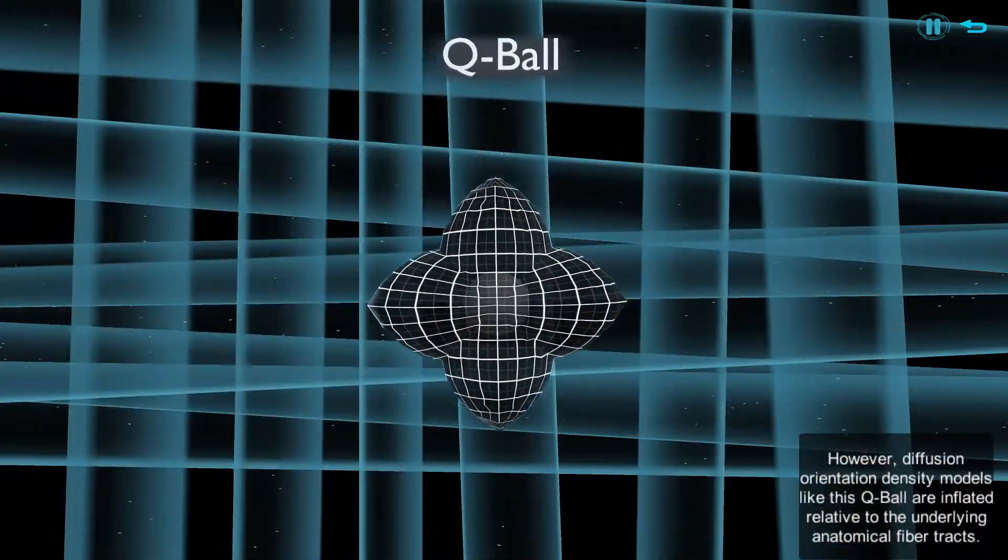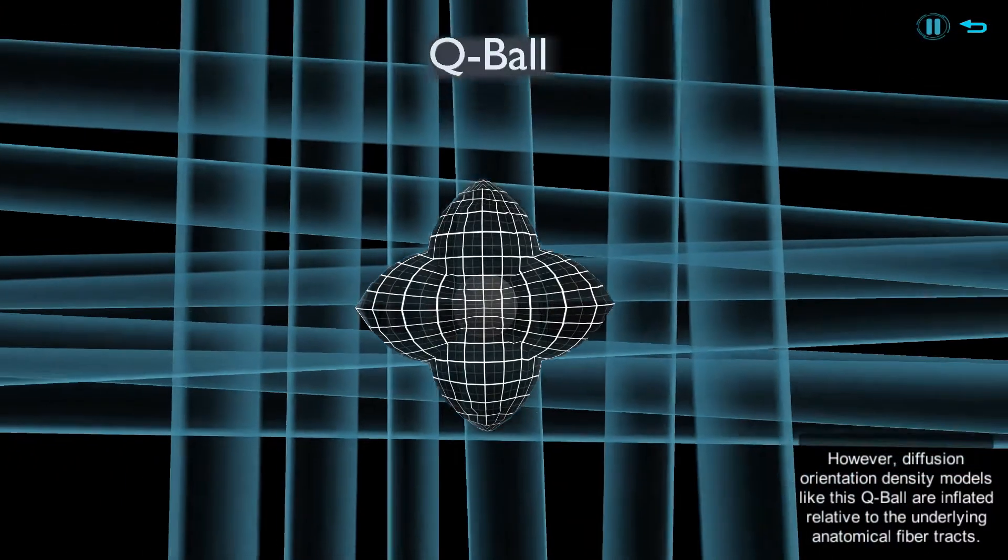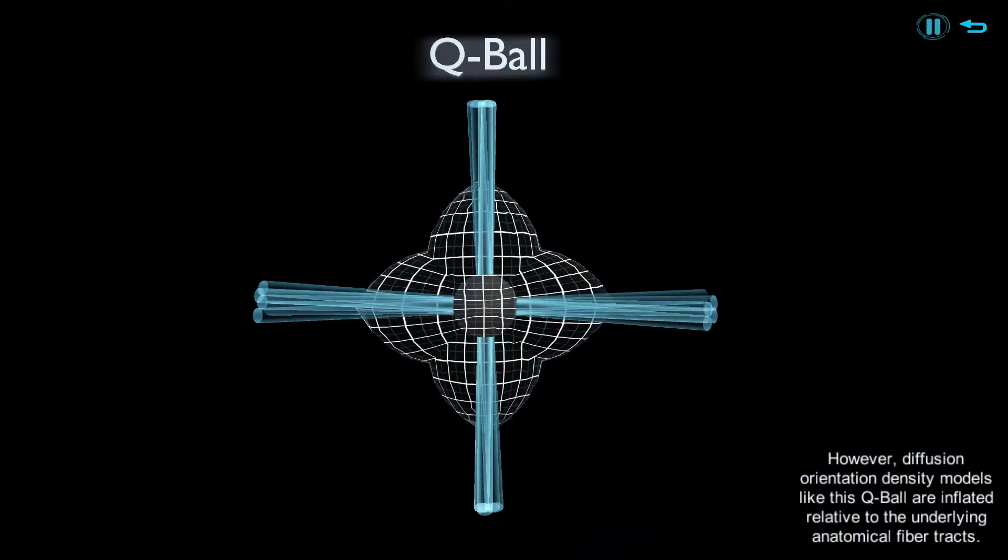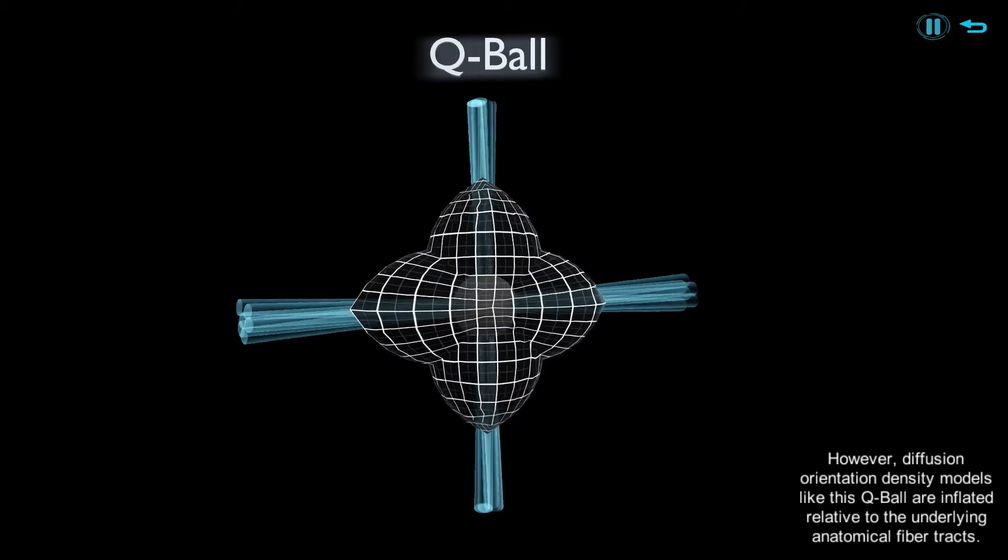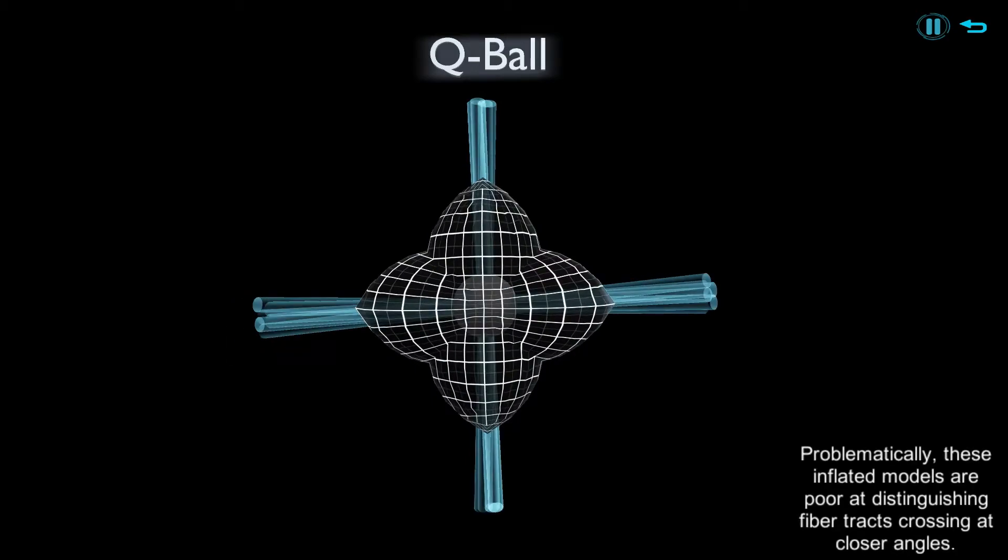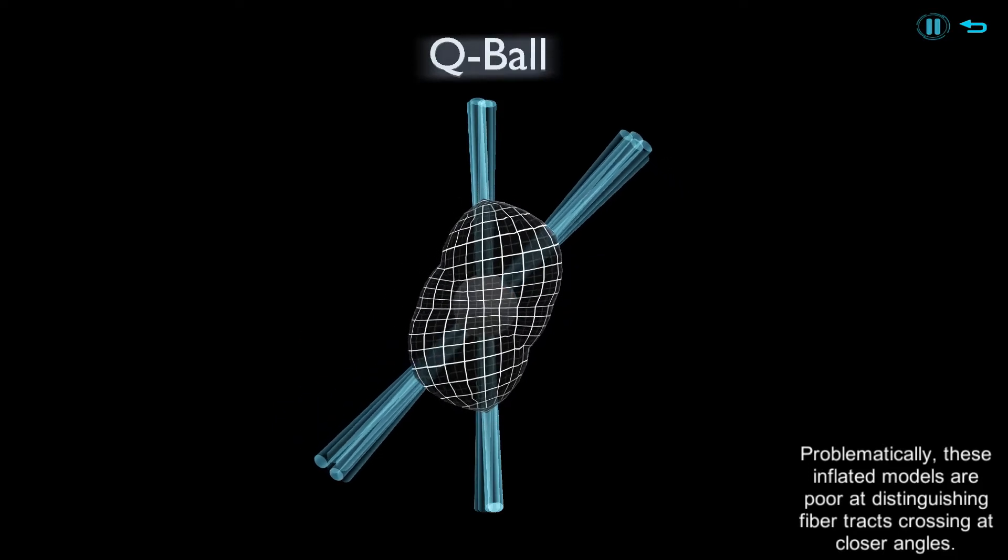However, diffusion orientation density models like this Q-ball are inflated relative to the underlying anatomical fiber tracts. Problematically, these inflated models are poor at distinguishing fiber tracts crossing at closer angles.